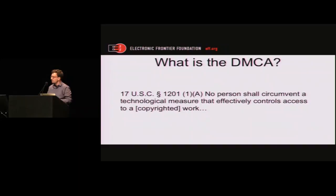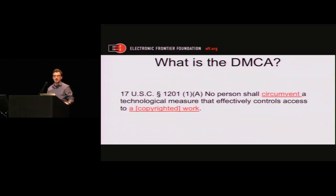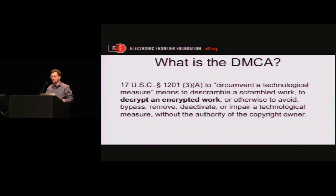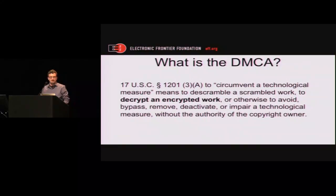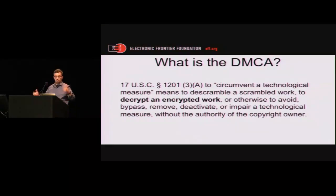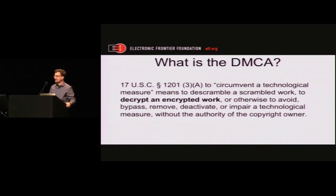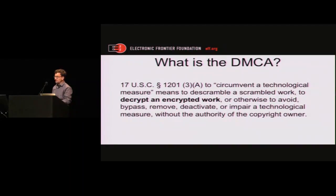The heart of it: "No person shall circumvent a technological measure that effectively controls access to a copyrighted work." What does that mean? A copyrighted work is generally any form of creative work, including software, source code, object code, any kind of code. And circumventing a technological measure — the law gives us that definition — and there's a very specific callout to decrypting an encrypted work. You can face civil or criminal liability under this law, and the penalties are significant and have been used.